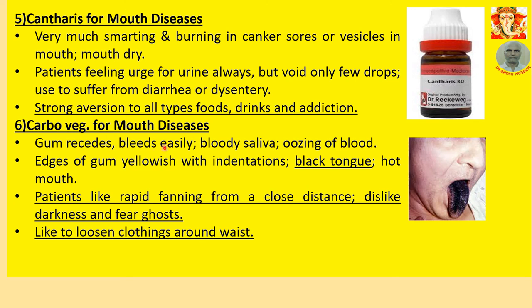Number 6: Carbo Vegetabilis for mouth diseases. Gum recedes and bleeds easily. Bloody saliva, oozing of blood from edges of gum. Yellowish gum with indentation. Black tongue — this is a rare situation. Hot mouth. Patient likes rapid fanning from a close distance. General symptoms: Dislike of darkness, fear of ghosts, likes to loosen clothing around the waist.